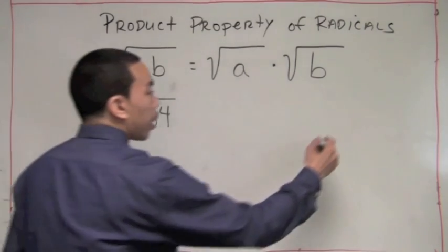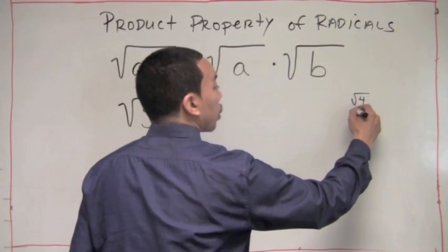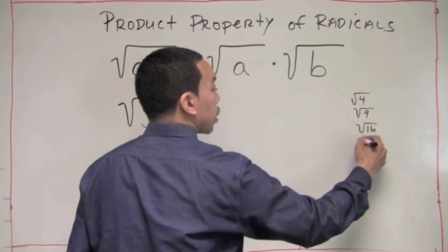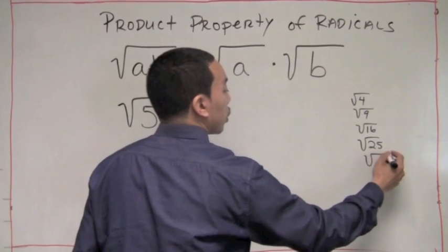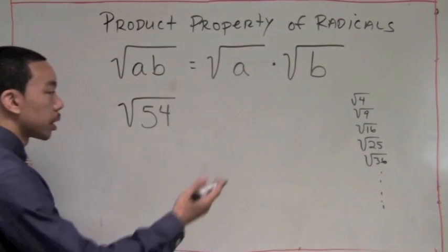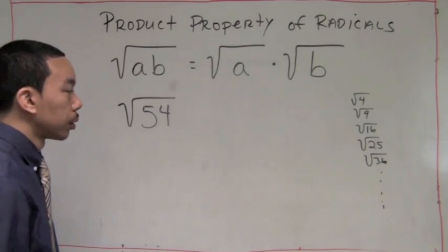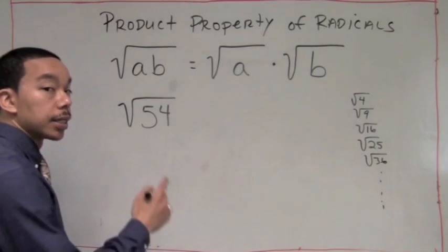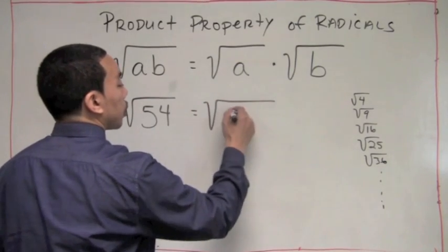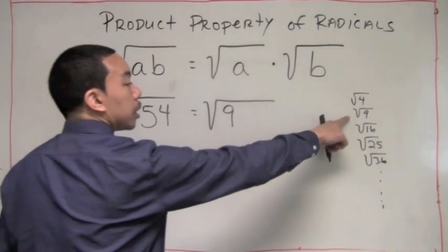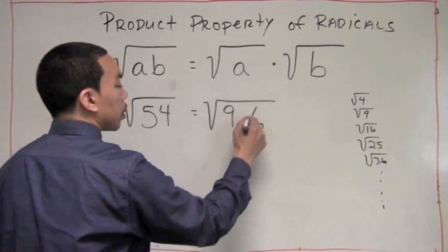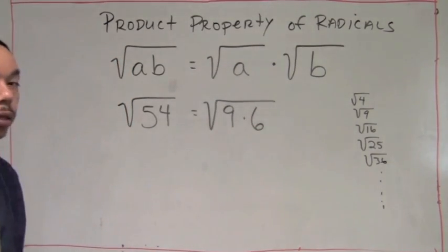Looking at our list of perfect squares — 4, 9, 16, 25, 36, and so on — we want the largest one that goes evenly into 54. That would be 9. Nine is on our list and goes into 54 six times, so we have the square root of 9 times 6.